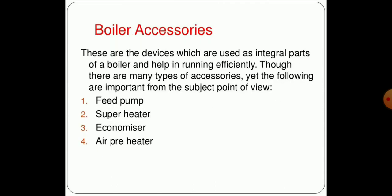Now what are the accessories? We have already seen the mountings of the boiler, and what we see now is the boiler accessories. There are two different things in this topic: first one is boiler mountings and another one is boiler accessories. Boiler accessories are devices which are used as integral parts of the boiler and help in running it efficiently. Though there are many types of accessories, the following are important. First one is feed pump, second one is super heater, third one is economizer, and last one is air preheater.